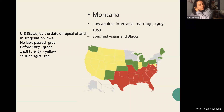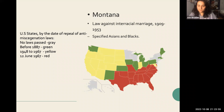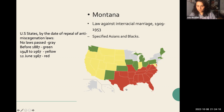This diagram shows the dates of repeal of anti-miscegenation laws. Gray indicates no laws passed; green indicates laws repealed before 1887; yellow indicates 1948 to 1967; red indicates June 12, 1967. This is a really valuable diagram because it shows how recently — for most states — these laws were changed. The yellow and red make up most of the map, showing that the majority of the U.S. did not repeal these laws until around the 1960s.